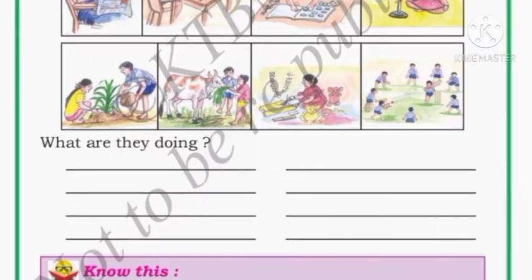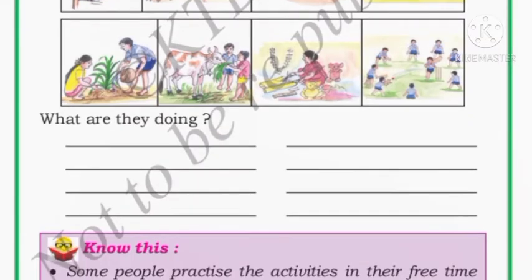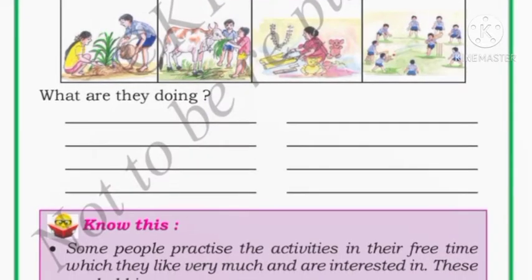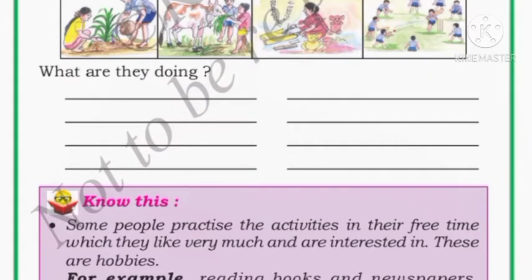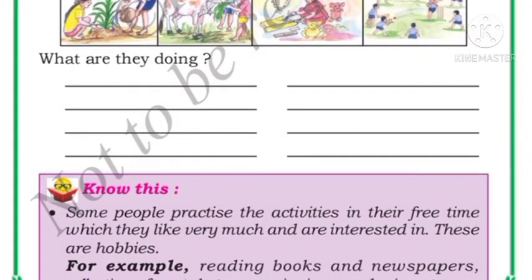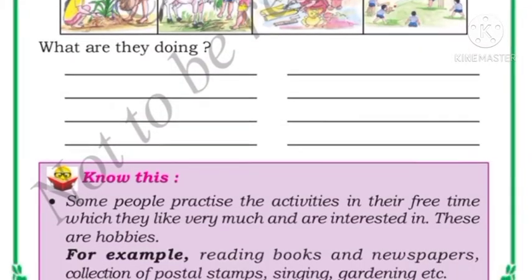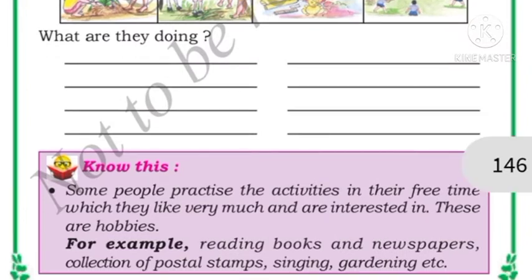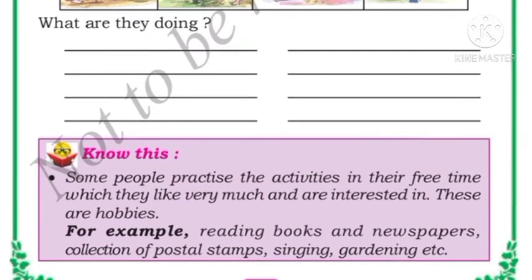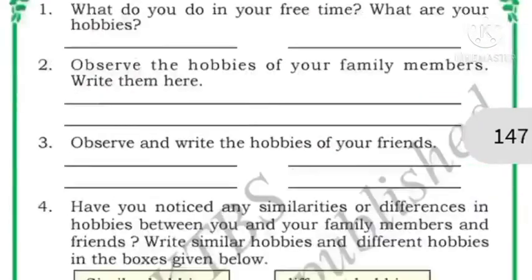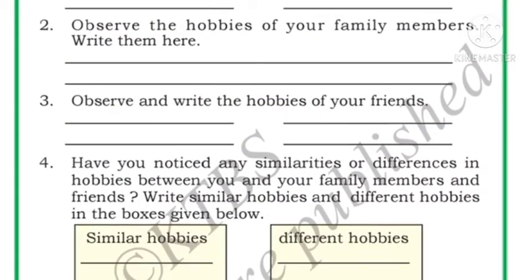In the second line: first one is planting, then feeding animals, then art and craft, then playing. They are all doing different works. Some people practice an activity in their free time which they like very much and which they are interested in — these are called hobbies. For example, reading books and newspapers, collection of postal stamps, singing, gardening, etc.